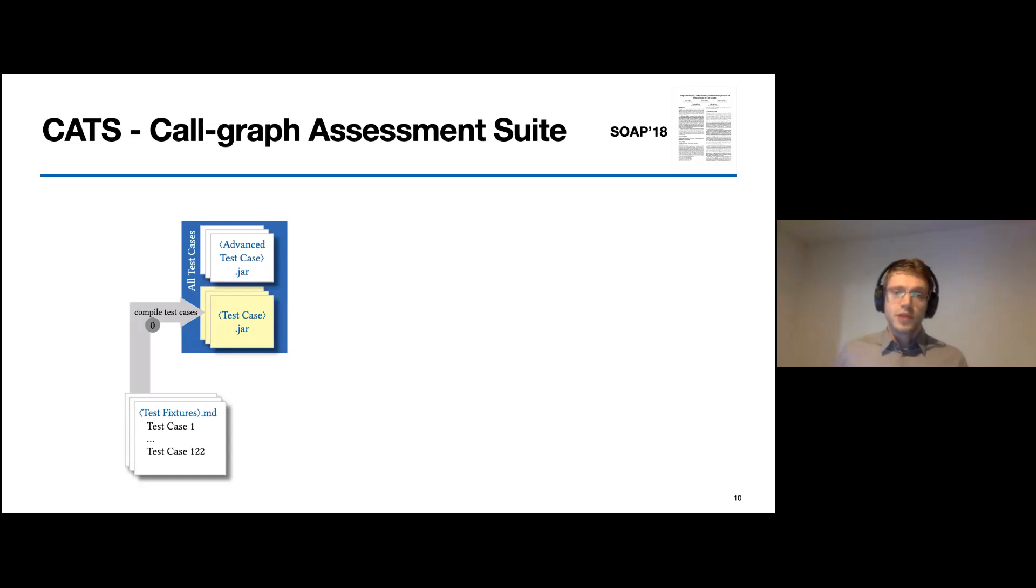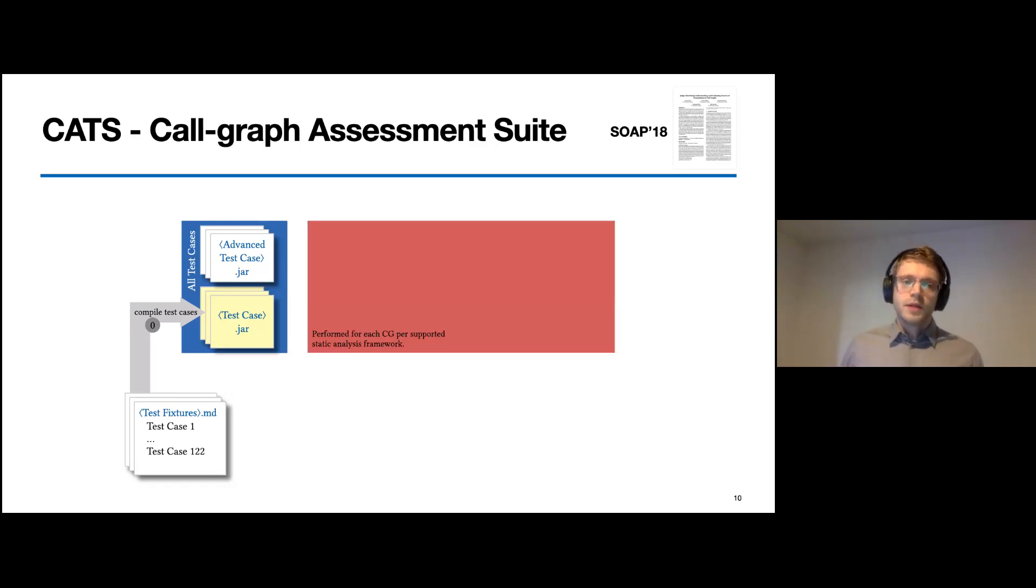Each single test case tests a unique language feature or API call, which is relevant in call graph construction. Additionally, all test cases are also annotated with the expected call edges. Please note that all the annotations we did aimed for soundness and not for precision. Then, when we have all the test cases, they are compiled to an executable Java program. We also provide advanced test cases where we manually, for example, engineered the bytecode because we couldn't create it with the Java compiler.